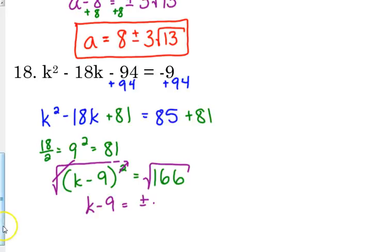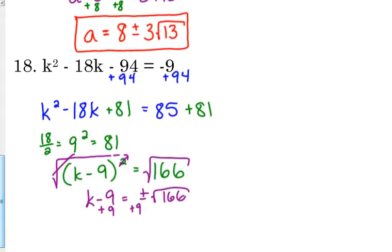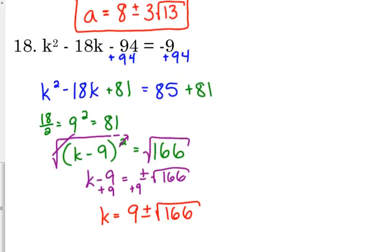Oh, we can't. It is not evenly divisible by any of our perfect squares, so we'll just leave it. And then we've got to isolate, so we add 9 to both sides. So we get K is equal to 9 plus or minus the square root of 166. Now, I'm pretty confident in our arithmetic there, so I'm not going to wait by checking it.